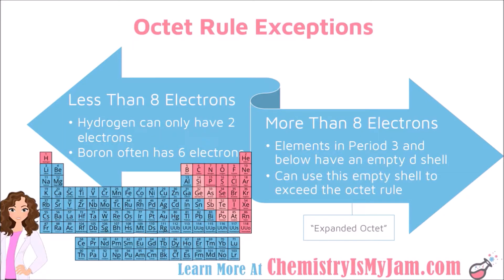The other type of octet rule exception would be having more than 8 electrons. This is going to apply to elements that are in period 3 on the periodic table or below. The first 2 periods of elements cannot do this. But if you are in period 3 or below, then these elements can handle having more than 8 electrons.